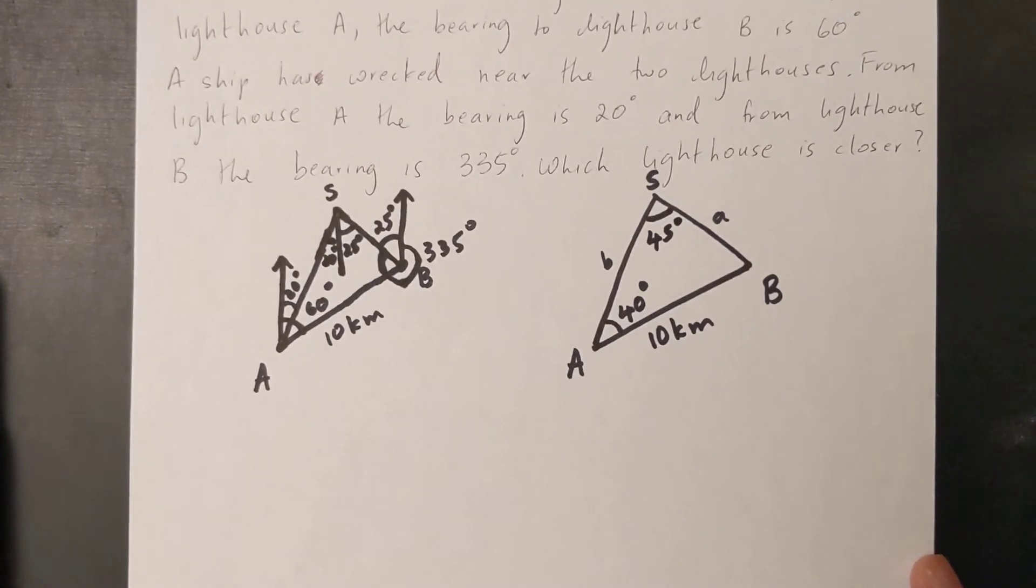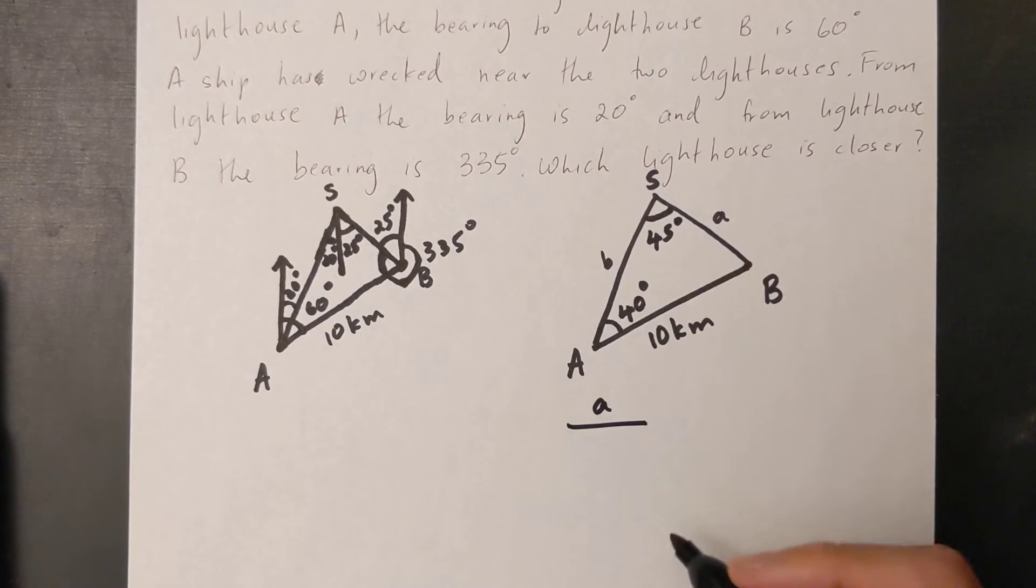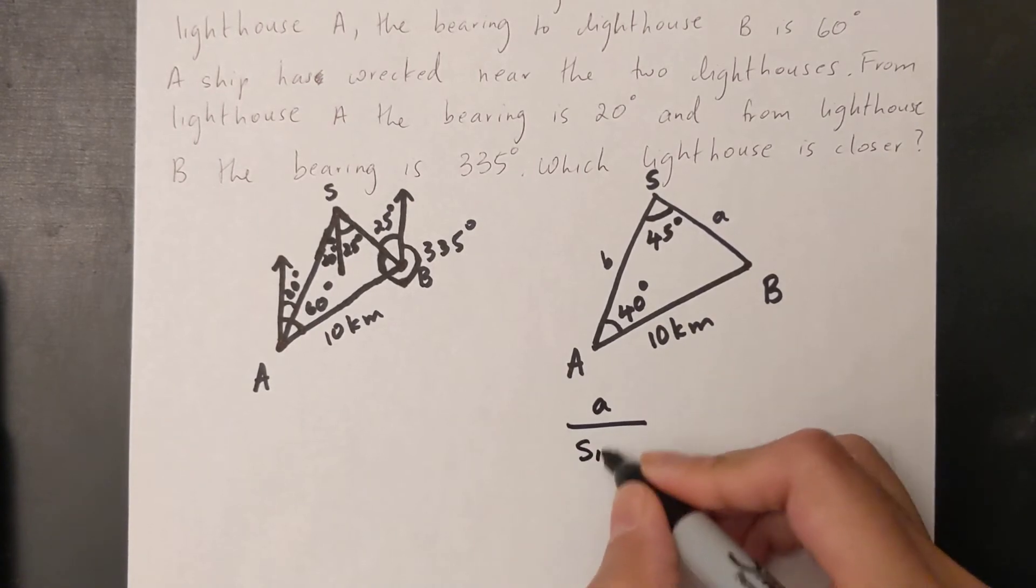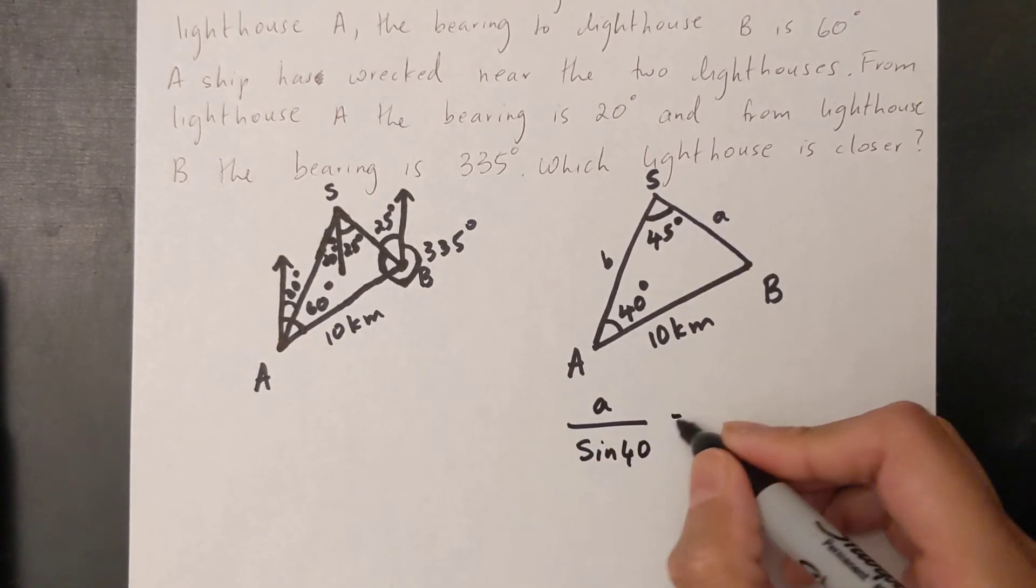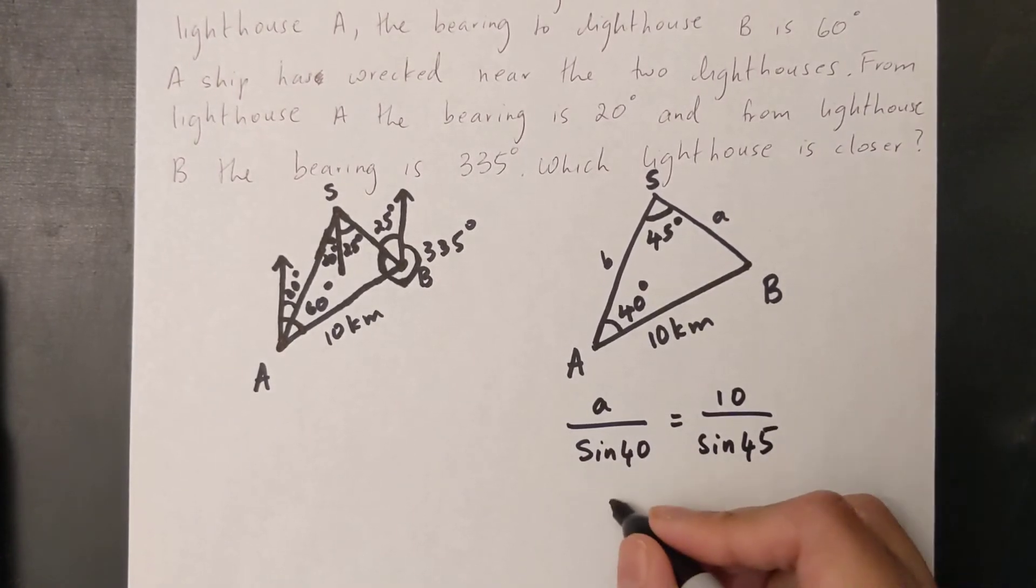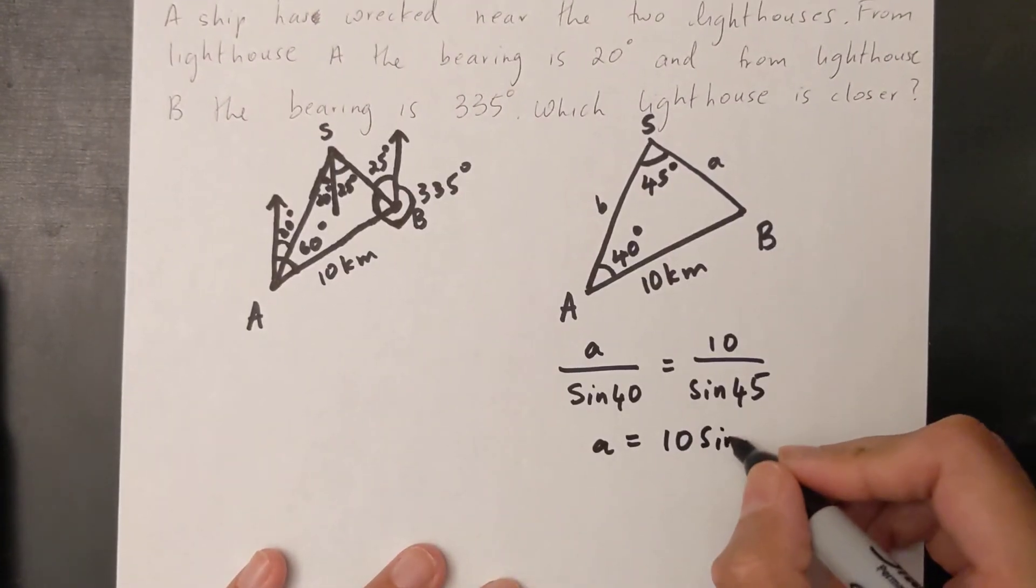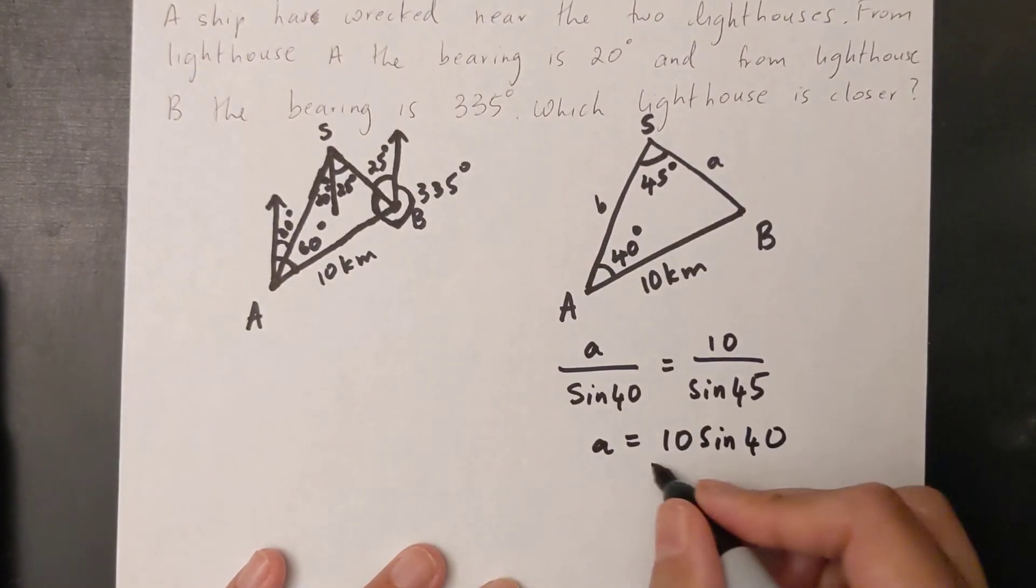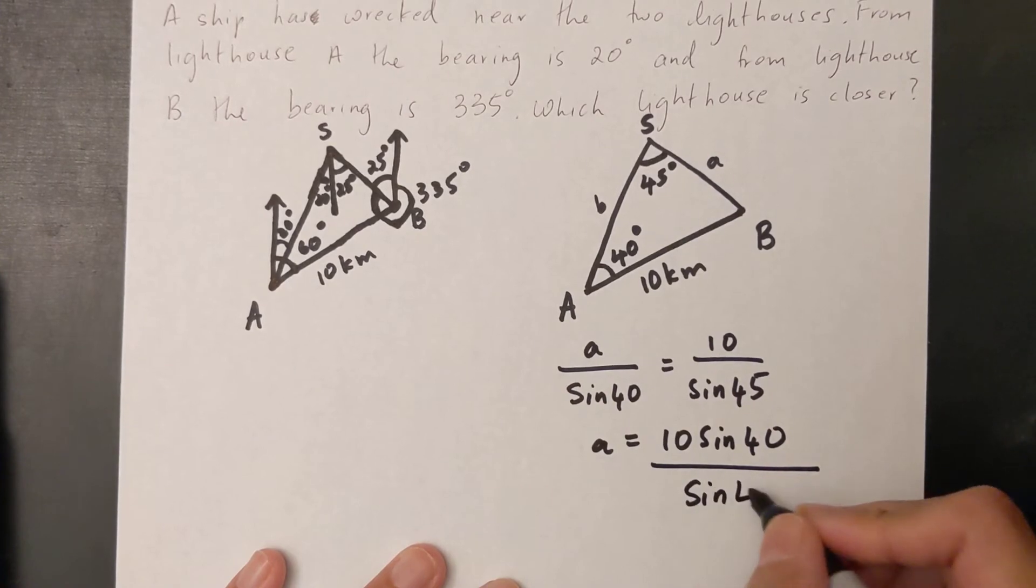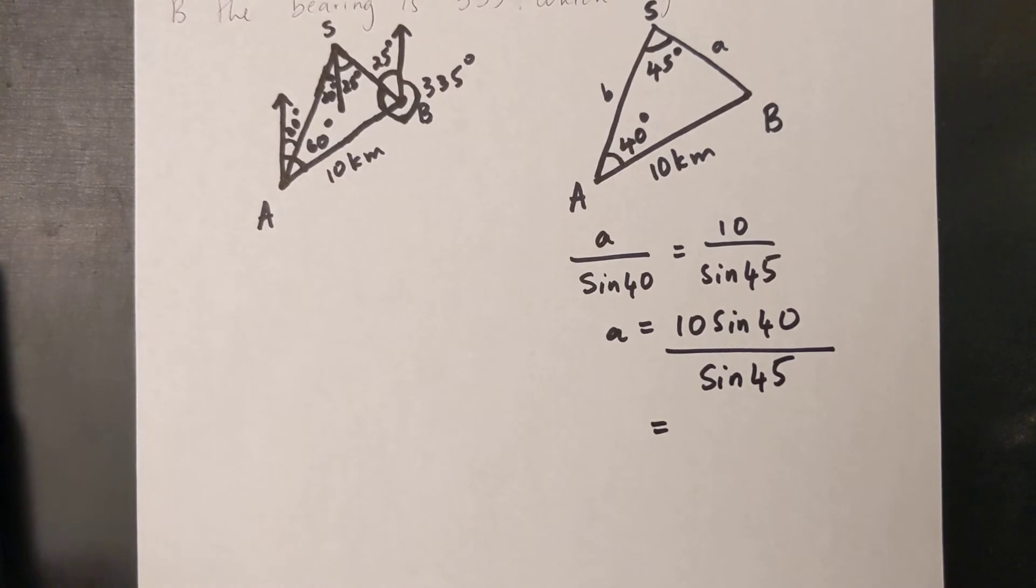Now I have enough information to solve using sine law. So first thing I'll solve for is small a because I know this angle. So a over sine 40 equals 10 over sine 45. A equals 10 sine 40 over sine 45.